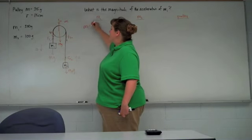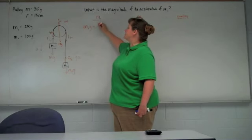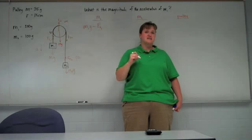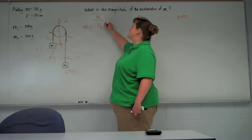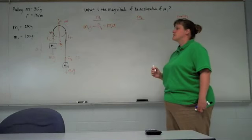So adding up the forces, we have m1g that's downwards. Force of tension one is upwards so we'll subtract that. Those are the net forces acting on mass one. So that has to equal mass one times its acceleration. So there's one equation.